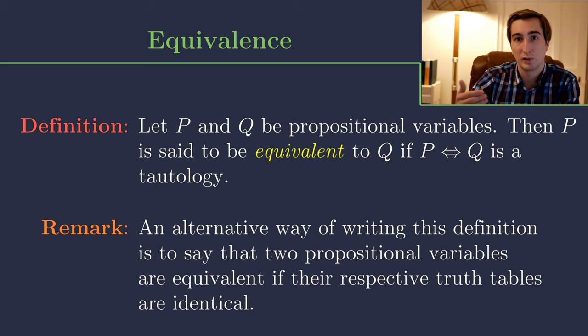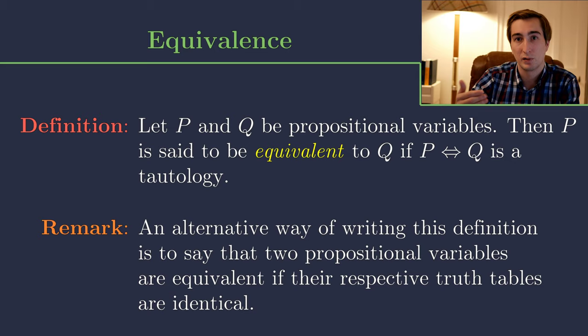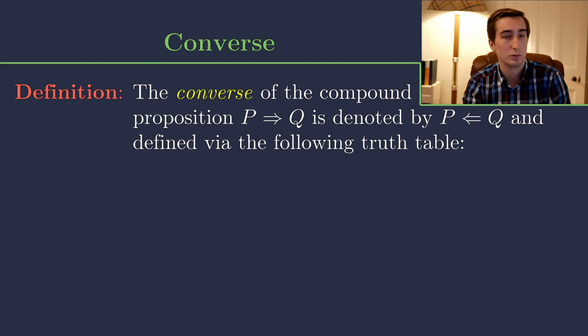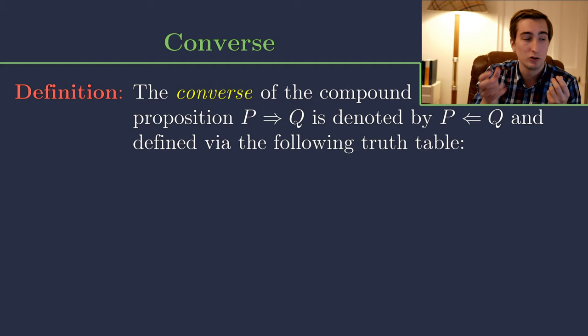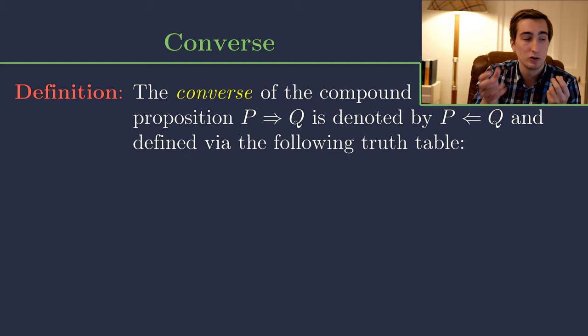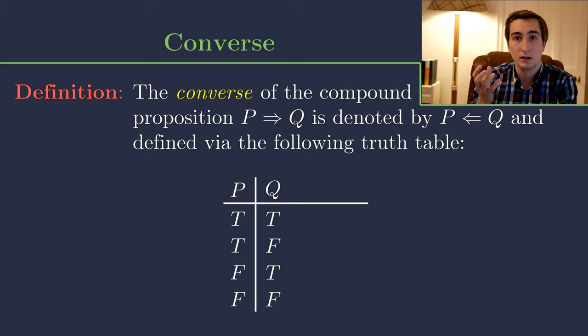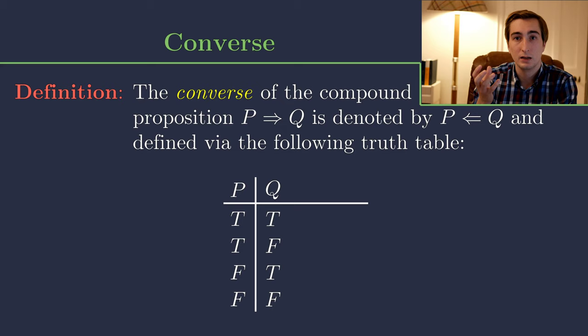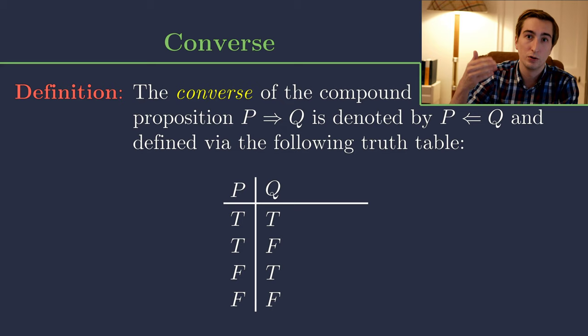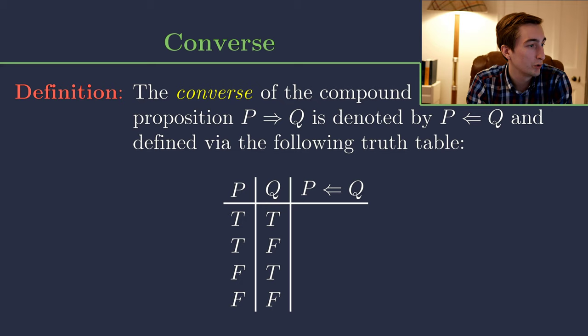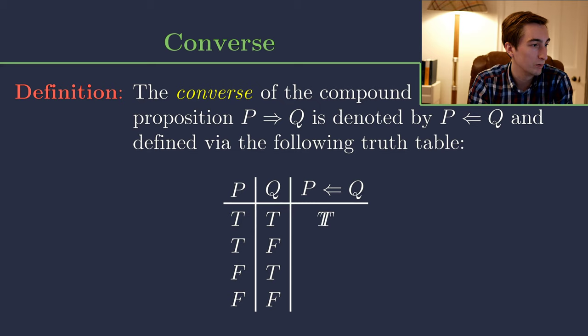Now let's look at the definition of the converse of an implication statement. The converse of the compound proposition p implies q is denoted by the arrow flipped around 180 degrees, i.e., q implies p, and it is defined by the following truth table. We write out p and q, and the converse of p implies q is the same as q implies p. We already know how to write down the implication operator both in the direction p to q and q to p, so we can fill in all the truth values.